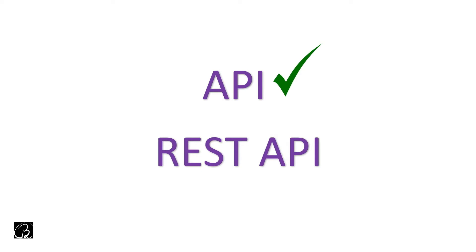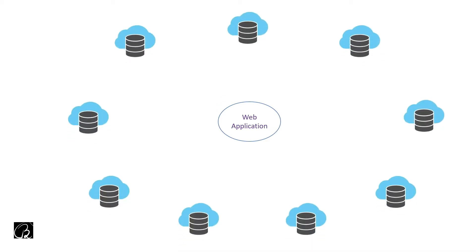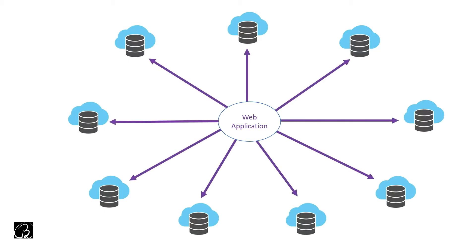Let us understand a situation. Let's say you have created a web application and you want to integrate multiple features in it. That's why you need to take help from some third-party APIs so that you can talk to those third-party servers in order to get data and integrate those features. This is a situation where your web application is talking to all the servers using third-party APIs.